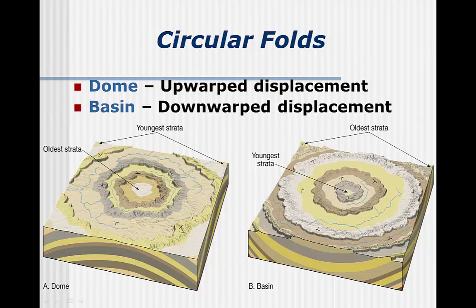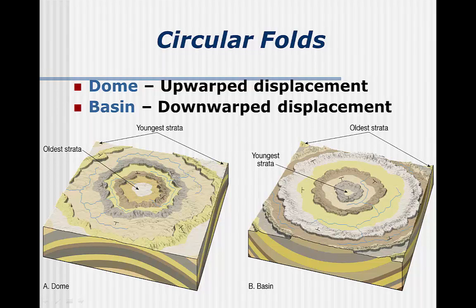Circular folds can be caused by compressional stress, but there are other methods that are more common. For example, the upward bent rocks in a dome can result from growth of salt underneath. This is especially common in the Gulf of Mexico where domes serve as oil traps. Basins are downward bent rocks that can form from the weight of overlying sediment. The underground geology of Illinois is essentially a large basin that allowed the accumulation of swampy sediments over millions of years, which is why the state has coal underneath almost all parts of the state.